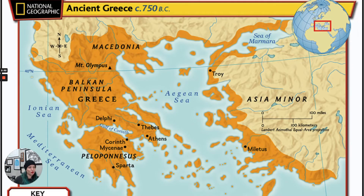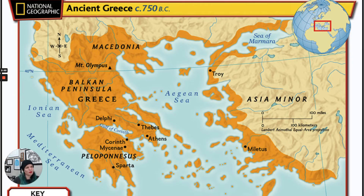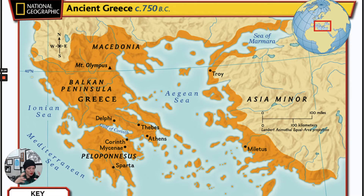Let's orient ourselves on a map — this one's from National Geographic, a good place to get maps. When we're looking at ancient Greece around 750 BC, here's the Greek mainland, and then we have all the islands we were already talking about: Crete, the Cycladic islands — all that stuff is part of this.